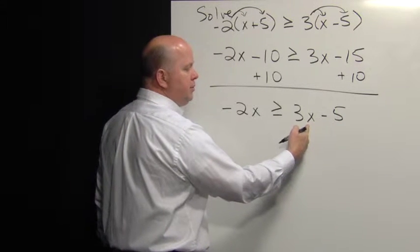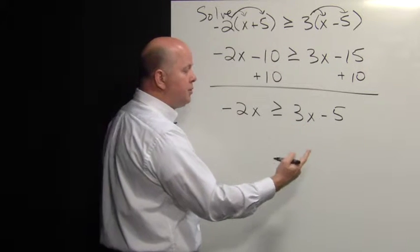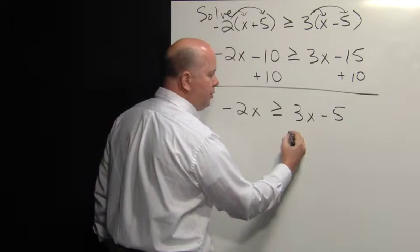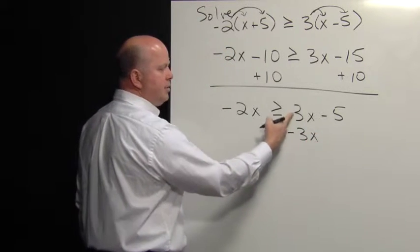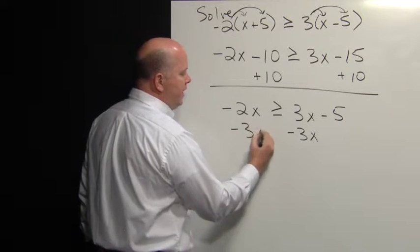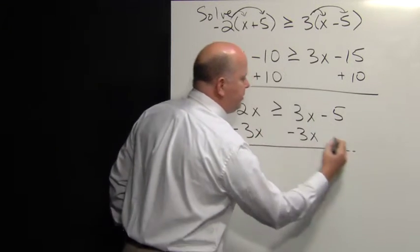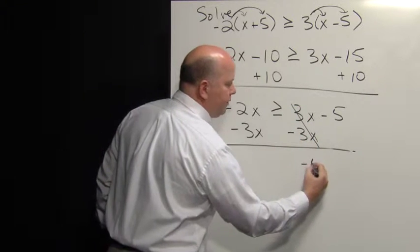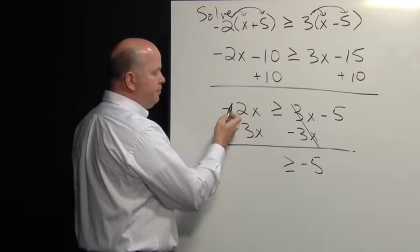We need to eliminate three X from the right-hand side. To do that, we want to do the inverse of addition, so we subtract three X from that side, because three X minus three X would be zero. Zero plus negative five would be negative five. So on the right-hand side, we'd have negative five, greater than or equal to.